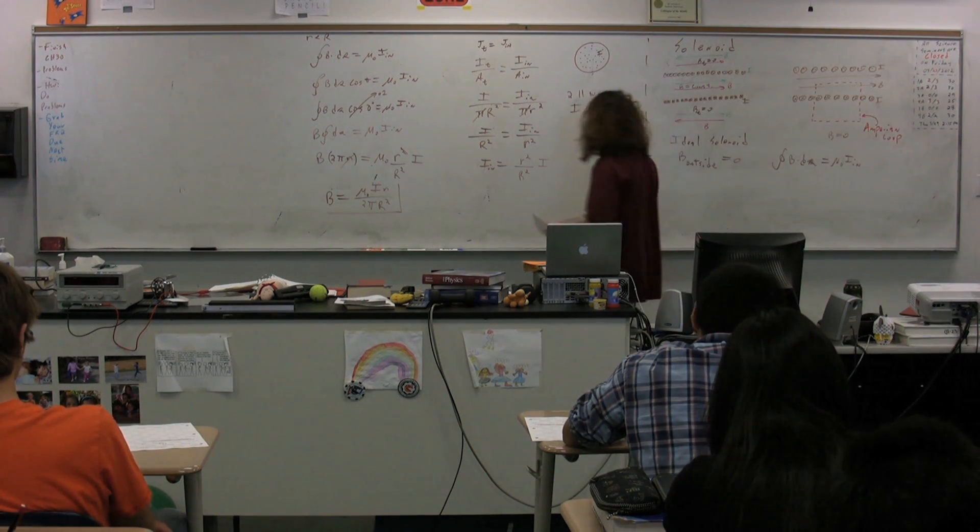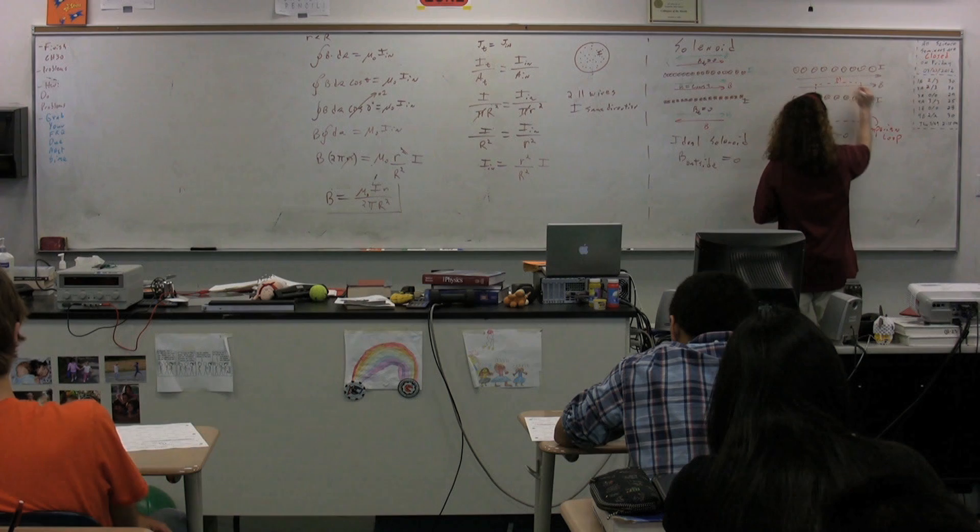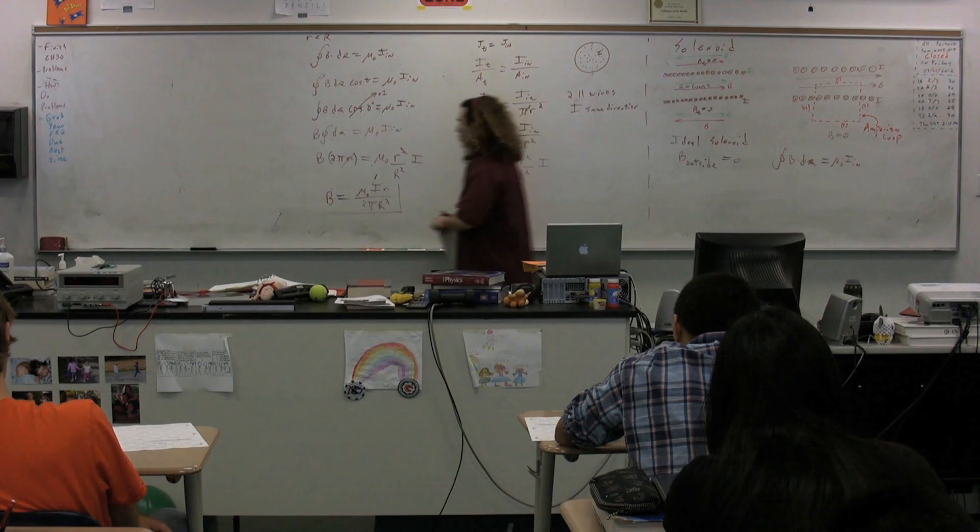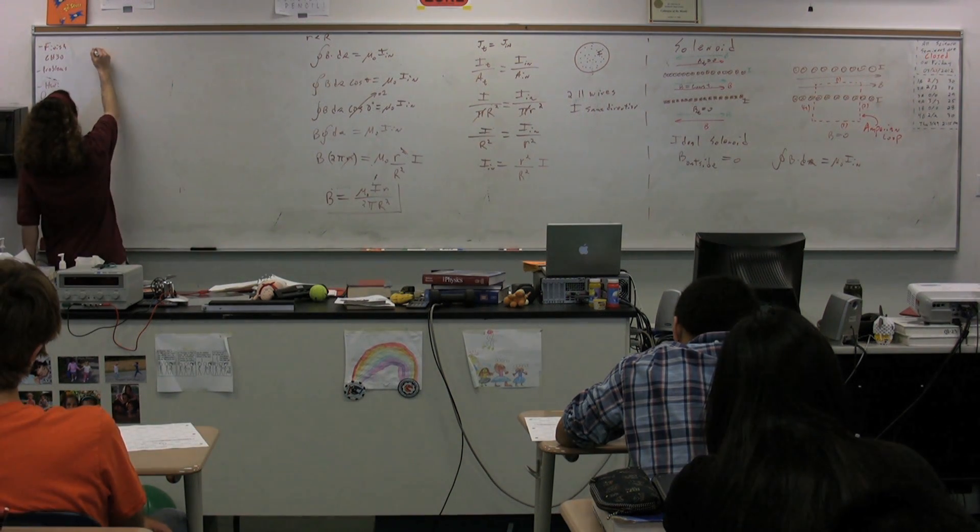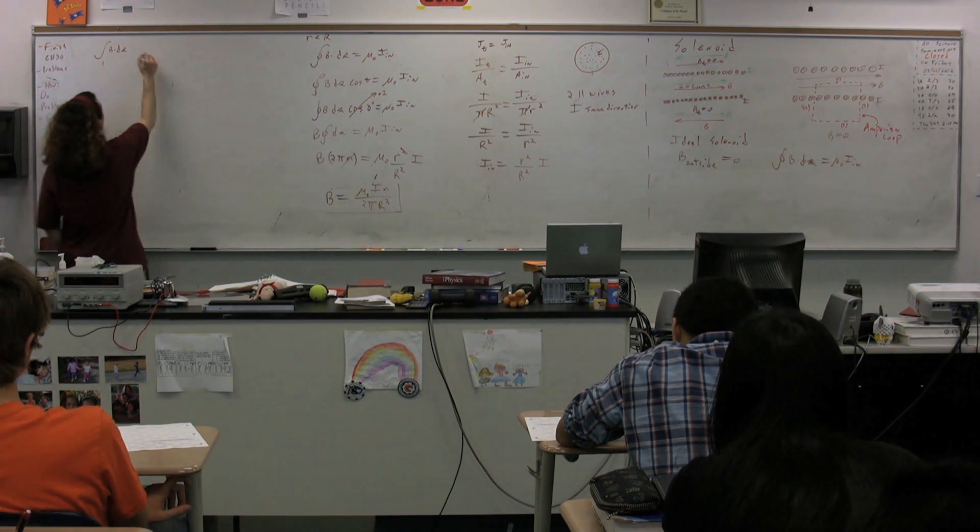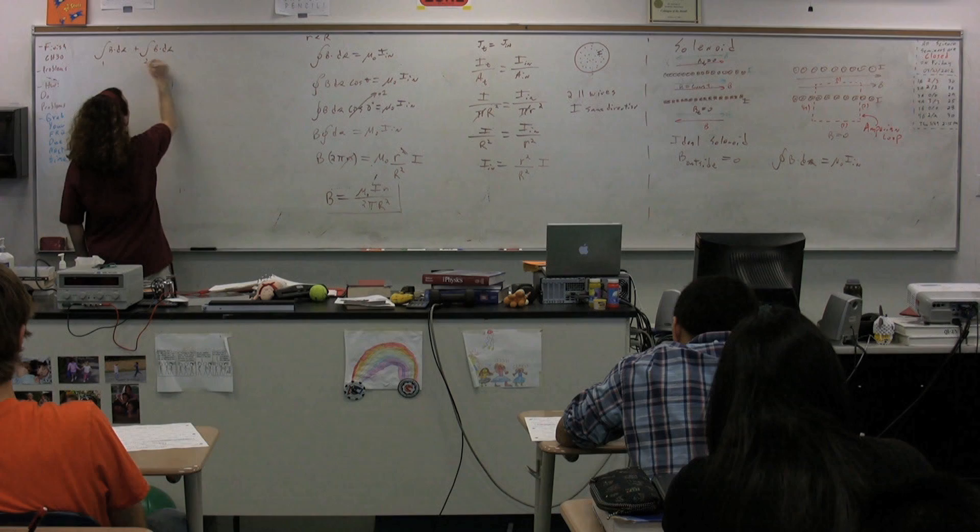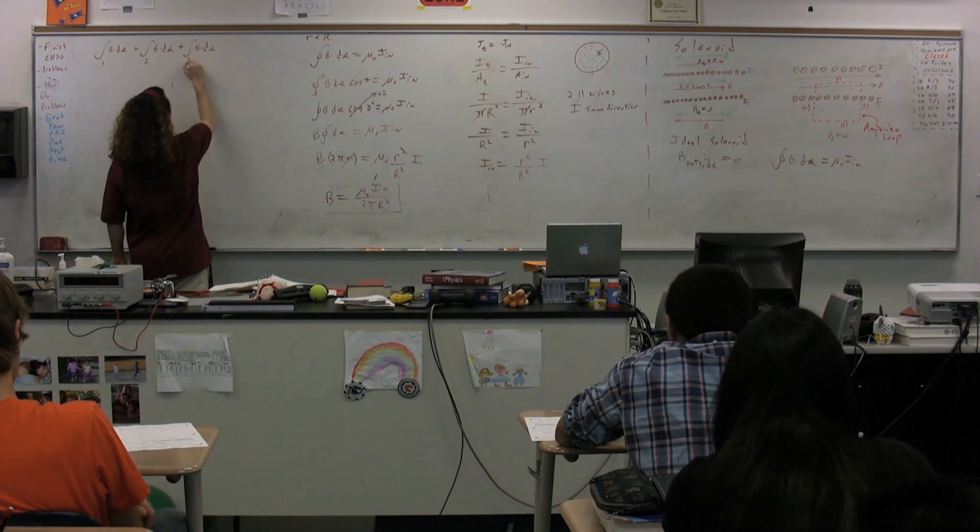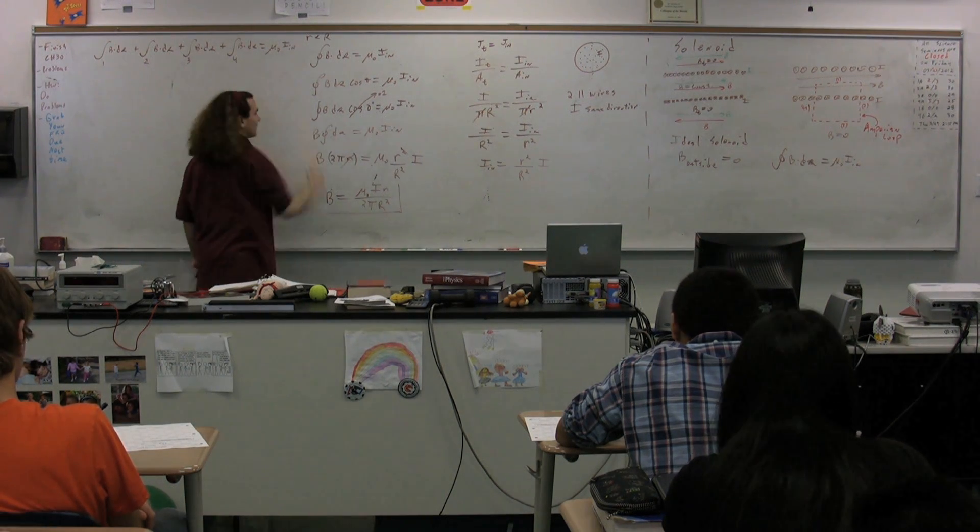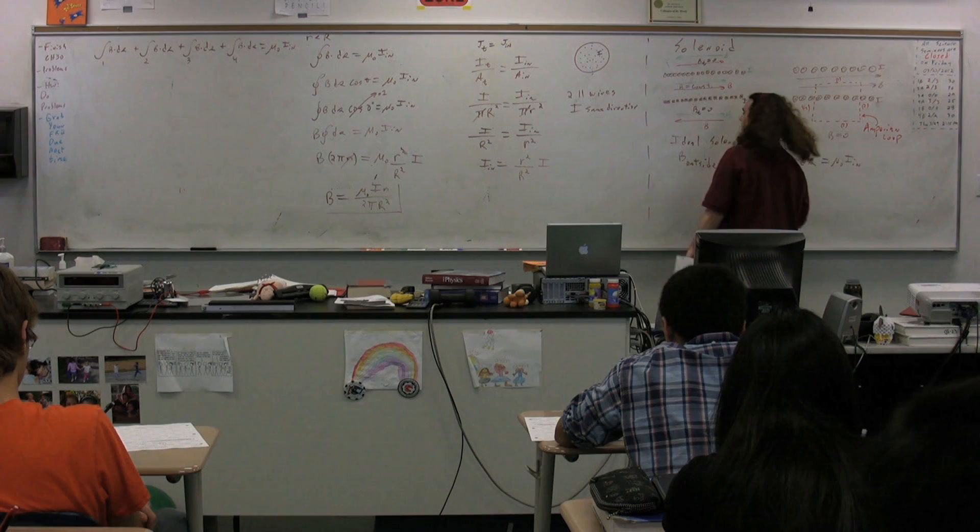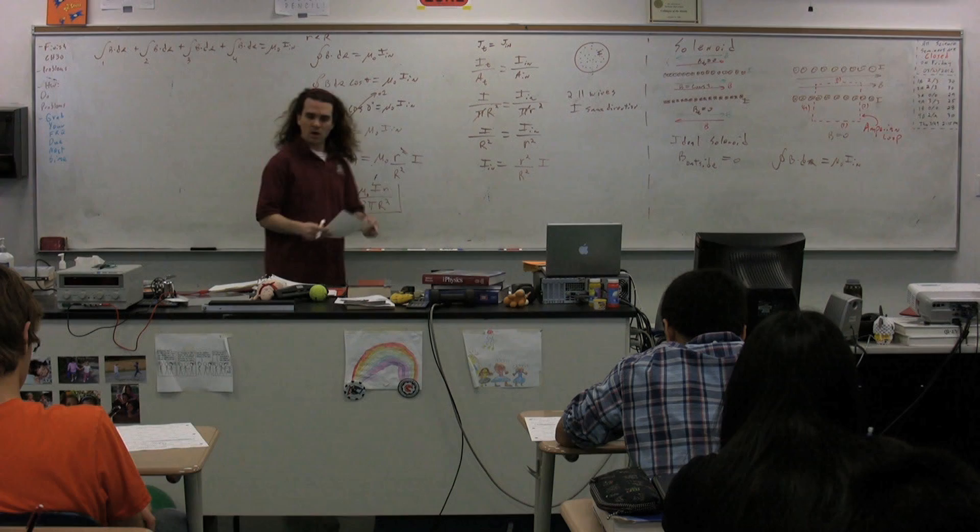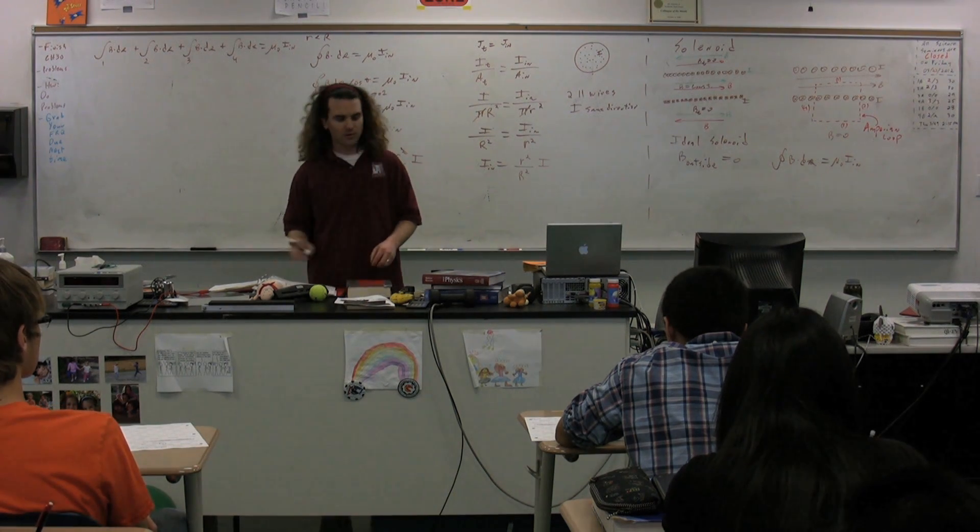We have a bunch of different sides to our amperian. We have side one, side two, side three, and side four. We now have to figure out the total because what this is going to be is the loop integral B dot ds for side one plus B dot ds for side two, B dot ds for side three, B dot ds for side four is equal to mu naught times the current on the inside. Because in order to have a closed loop, we need all four sides.